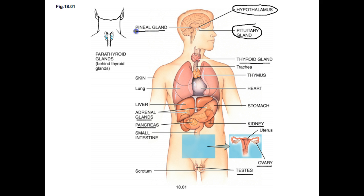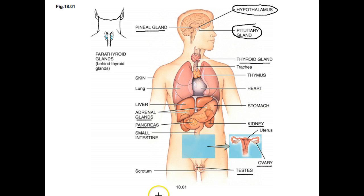And then the pineal gland in the brain. We're skipping some, like the heart — the heart does have an endocrine function, it does produce a hormone. But we'll cover that when we get to the chapter on the heart.